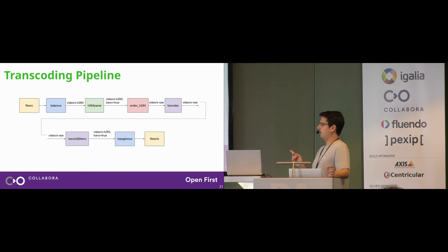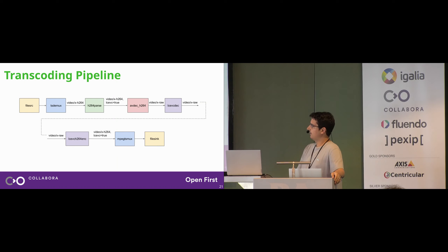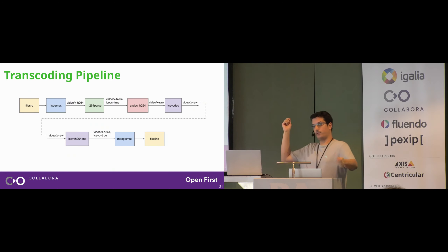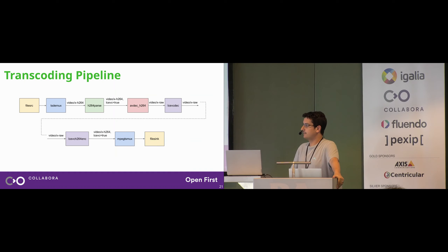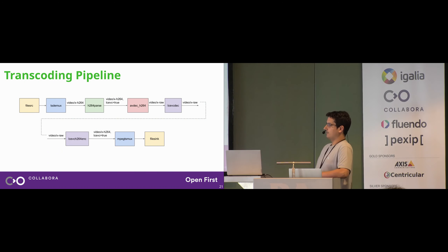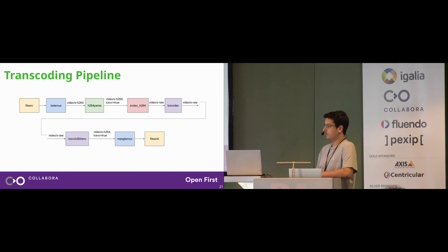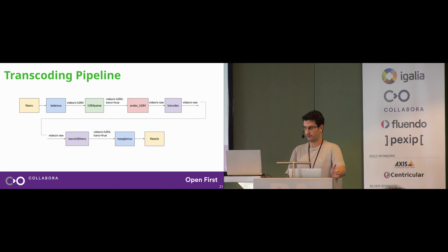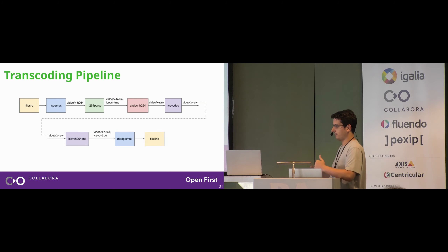One of the reasons we decided to attach LC-EVC metadata to buffers rather than creating another pad is that we want this decoder to behave the same way as most existing decoders. So if an application wants to update to LC-EVC, they just need to switch to the new decoder in their pipeline — they don't have to worry about new pads, new branches, or running different pipeline branches in parallel. It's very easy to update to LC-EVC in an existing application.